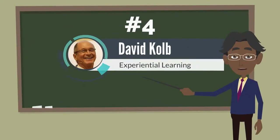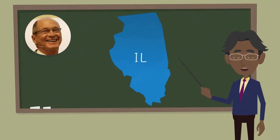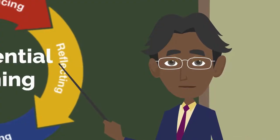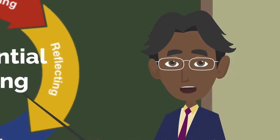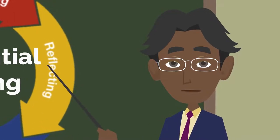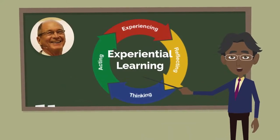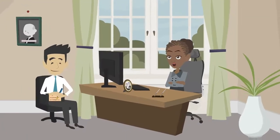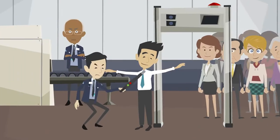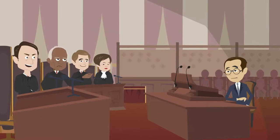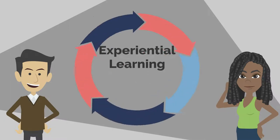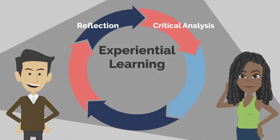Number four: David Kolb. David Kolb was born in Moline, Illinois in 1939. He was the author of the learning theory known as experiential learning. Experiential learning is an engaged learning process whereby students learn by doing and by reflecting on the experience. Activities can include hands-on laboratory experiments, internships, practicums, field exercises, study abroad, undergraduate research, and studio performances. Learning that is considered experiential contains all of the following elements: reflection, critical analysis, and synthesis.